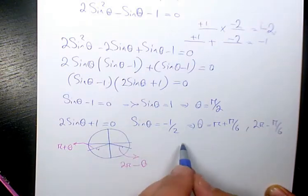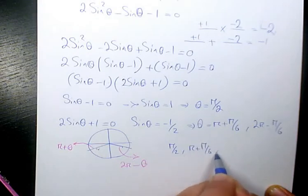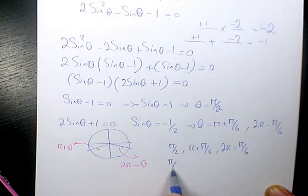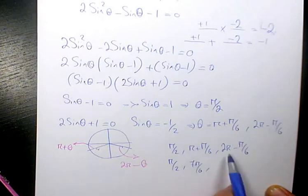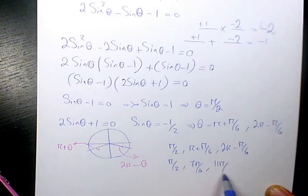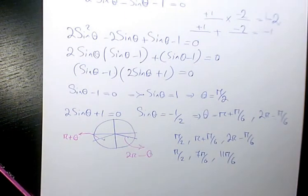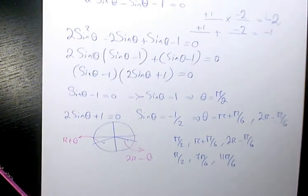So the answers are going to be pi over 2, pi plus pi over 6, and 2 pi minus pi over 6. Which will be pi over 2, that will be 6 over 6 plus 1, so 7 pi over 6. And here we have 12 pi over 6, 12 minus 1 is going to be 11 pi over 6. So we have these three answers to this question.